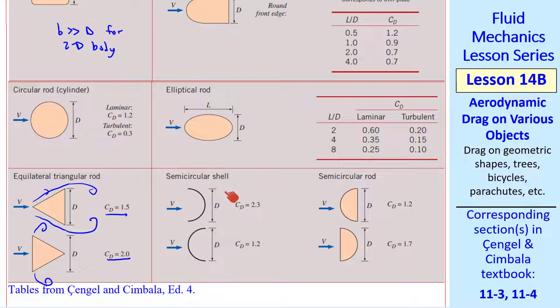We see a similar effect for a semicircular shell, where this case is more streamlined than this case. This case has a very high CD because the fluid gets trapped inside this shell. If it's a rod rather than a shell, we have similar behavior as we had here.